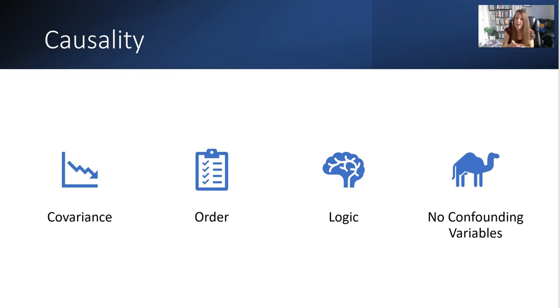Then you have to look at logic. Does it just make intuitive sense, essentially? So for example, the divorce rates and margarine consumption graph. Does it really make sense logically to argue that that is the most important factor in the success of a marriage? Probably not.